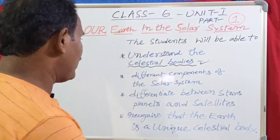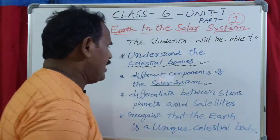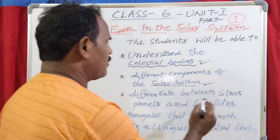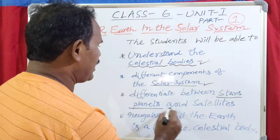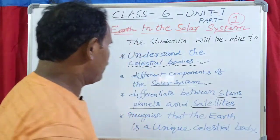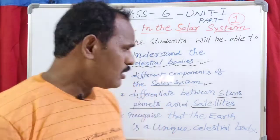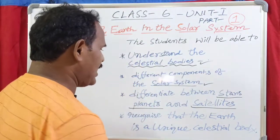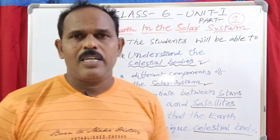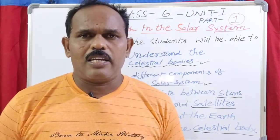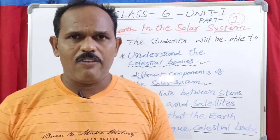The third one: how do we get a solar system? Differentiate between stars, planets, and satellites. The fourth one: recognize that the Earth is a unique celestial body.